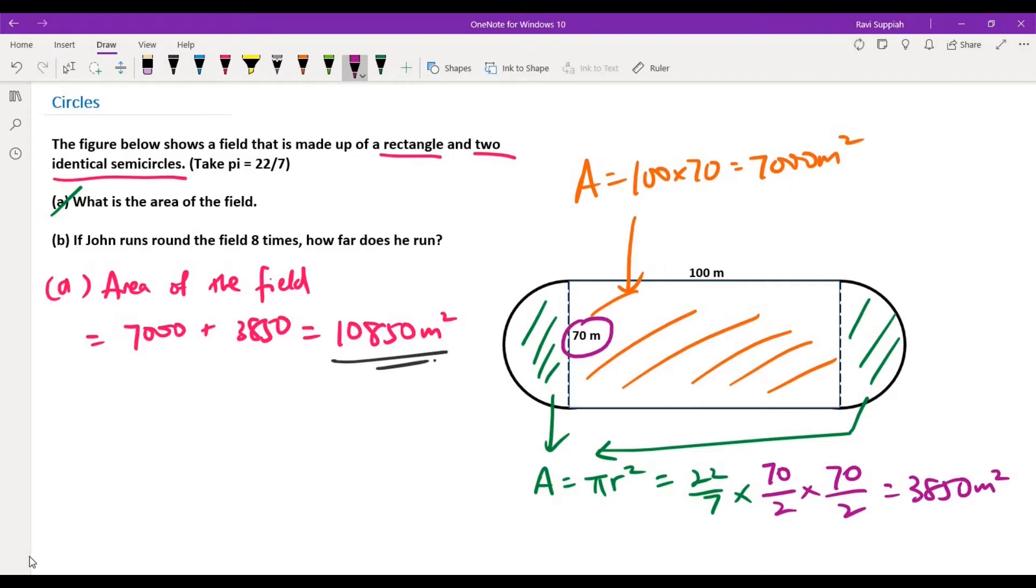Now let's look at part B. In part B, we are told that if John runs around the field eight times, how far does he run? So John is going to run around the field eight times. Now let's look at the distance he will cover for one round around the field.